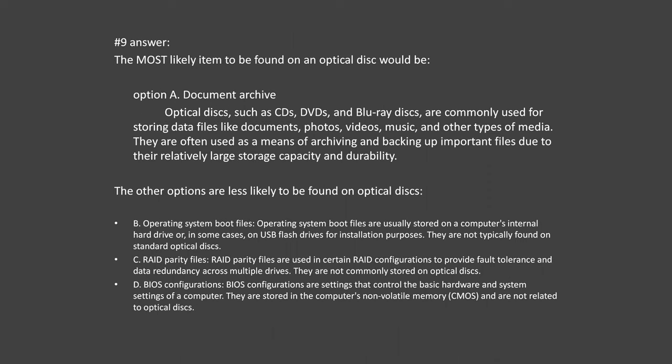The most likely item to be found on an optical disk is Option A: Document Archive. Optical disks such as CDs, DVDs, and Blu-ray disks are commonly used for storing data files like documents, photos, videos, and music, and are often used for archiving and backing up important files due to their storage capacity and durability. Operating System Boot Files are usually stored on a computer's internal hard drive or USB flash drives — not typically on standard optical disks. RAID Parity Files are used in RAID configurations for fault tolerance across multiple drives and are not commonly stored on optical disks. BIOS configurations are stored in the computer's non-volatile memory (CMOS) and are not related to optical disks.